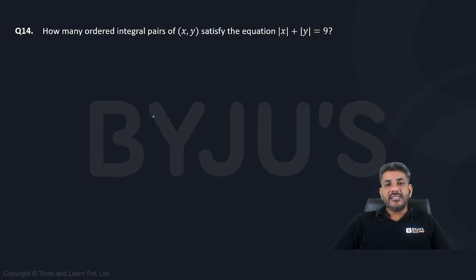This question says how many ordered pairs satisfy the equation |x| + |y| = 9 and these are integers. Basically, two integers add up to 9 and both of them are non-negative. Modulus means they are non-negative.